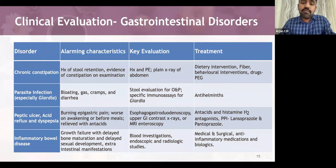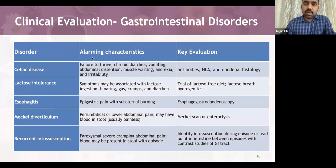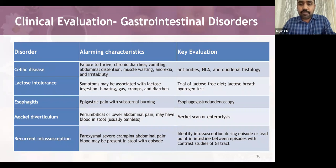Inflammatory bowel disease presents with alarming features including growth failure, delayed bone maturation, delayed sexual development, and extraintestinal manifestations (especially in Crohn's disease): oral aphthous ulcers, peripheral arthritis, erythema nodosum, digital clubbing, episcleritis. These children require blood investigations, endoscopy, radiological studies, and referral to a pediatric gastroenterologist for anti-inflammatory medications and biologics. Celiac disease presents with failure to thrive, chronic diarrhea, vomiting, abdominal distension, muscle wasting, and anorexia, requiring antibody testing, HLA typing, duodenal biopsy, and a gluten-free diet. Lactose intolerance causes symptoms — bloating, gas, cramps, diarrhea — associated with lactose ingestion.